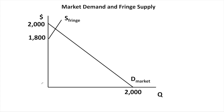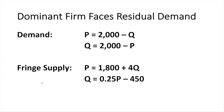Here's what these two curves look like on a graph. You have the market demand curve, and you have the supply curve — but it's just the supply for the fringe firms in the market. Of course, the dominant firm faces residual demand — that's the demand left over after all the competitive firms in the competitive fringe.